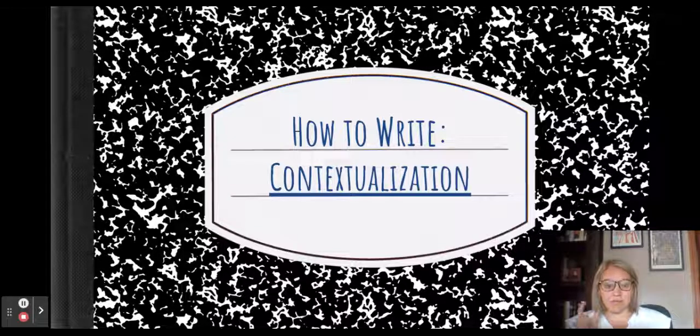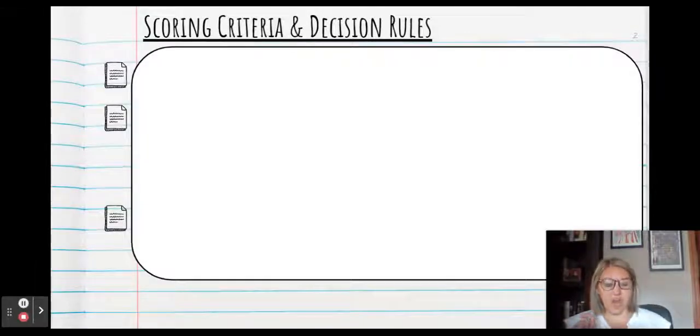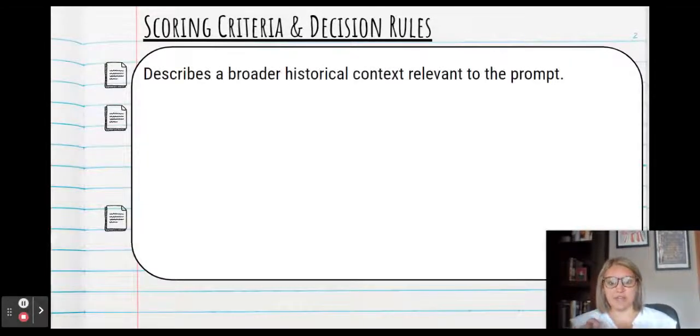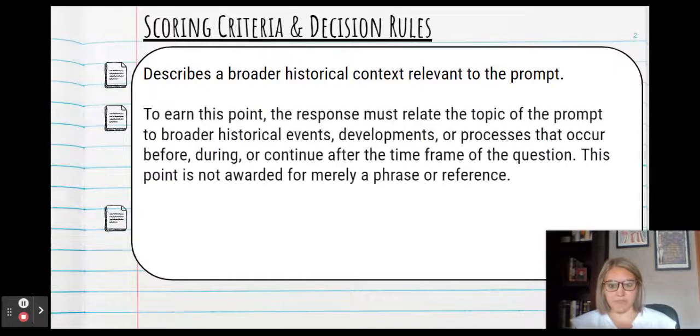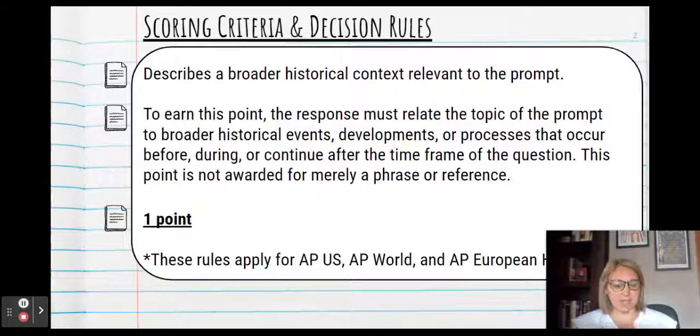If you would like a notes guide to follow along as we work through this video, check the description below and go ahead and click to download. First we want to understand what the college board describes on the rubric. We need to describe a broader historical context relevant to the prompt. To earn this point the response must relate to the topic of the prompt or to broader historical events, developments, or processes that occur before, during, or continue after the time frame of the question. This point is not awarded for merely a phrase or reference. It's one point and these rules apply to all the AP histories: AP US, AP world, and AP European history.